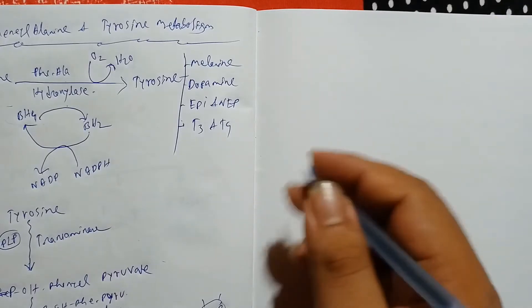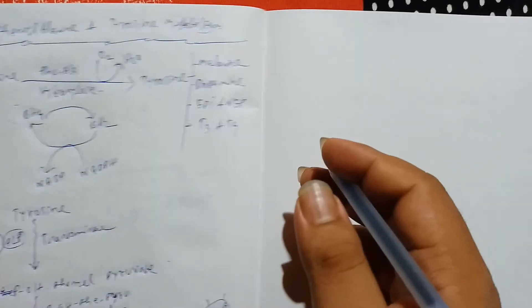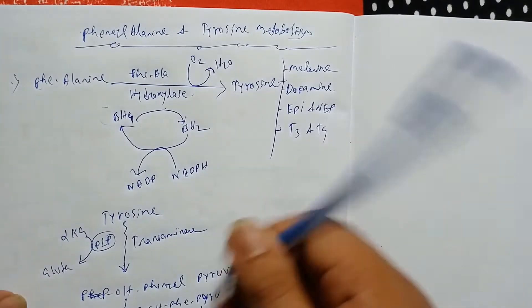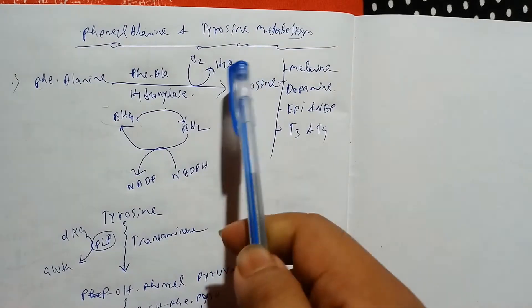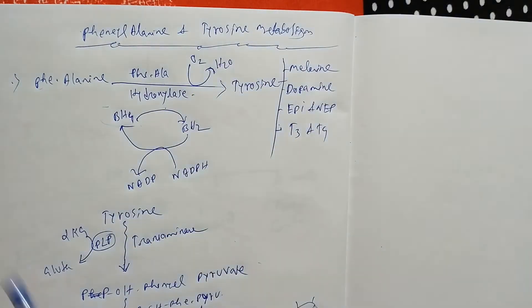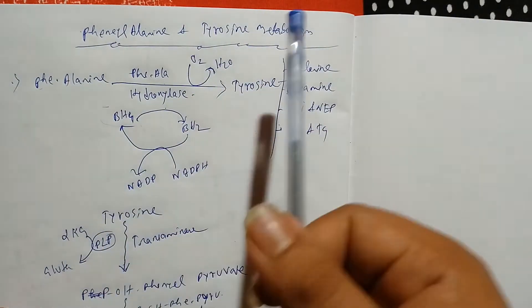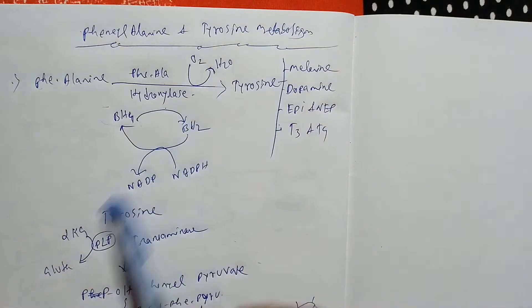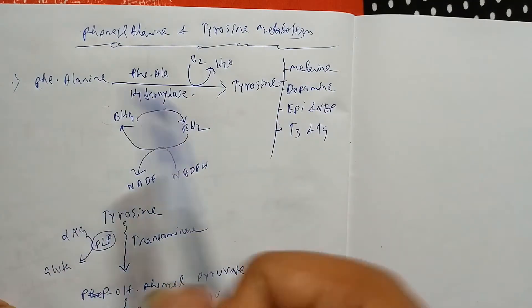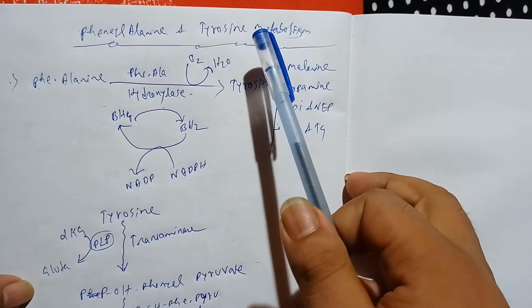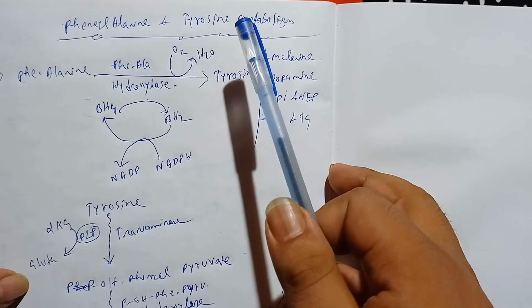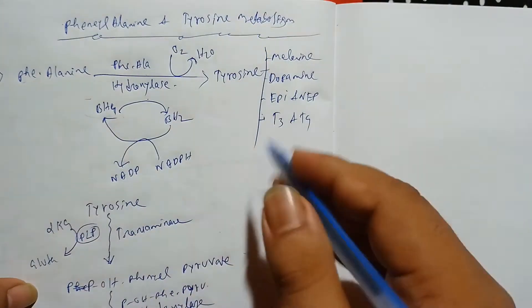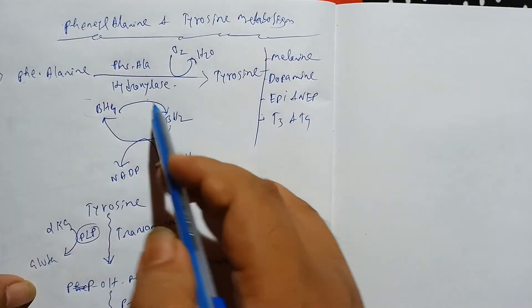Hello friends, welcome to Medicine Help. We are talking about phenylalanine and tyrosine metabolism and their enzymes in each stage. Now we'll talk about the dysfunction of the enzymes and the disorders regarding protein metabolism.